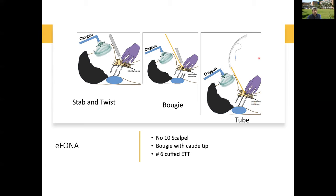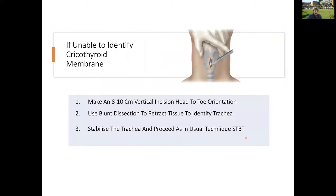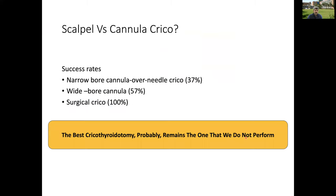First, make a stab incision then twist with the scalpel facing caudally, while continuously oxygenating. Insert the bougie caudally through the incision, then railroad the number 6 tube over the bougie, then ventilate using an Ambu bag. This is a very important technique — know it for clinical practice and exams. Regarding scalpel versus cannula cricothyroidotomy: surgical cricothyroidotomy success rate is about 100% while cannula cricothyroidotomy is about 30-50%. The best technique is whichever you perform regularly.